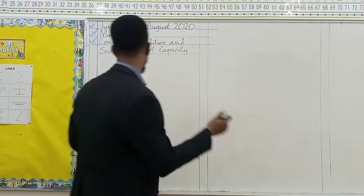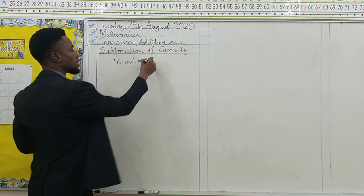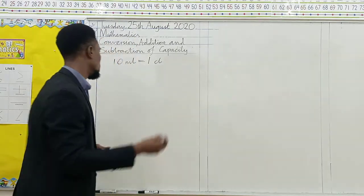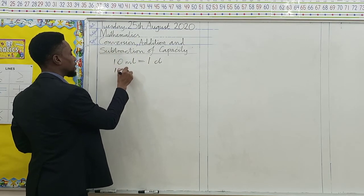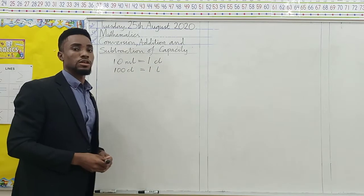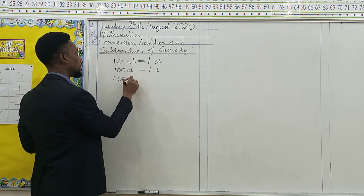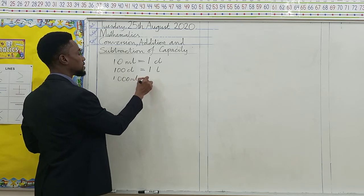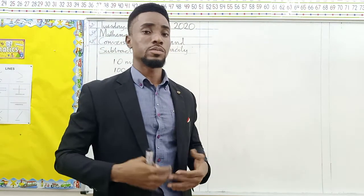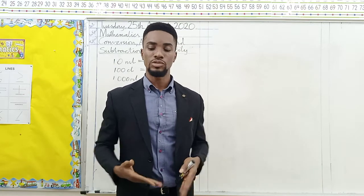Let's start with: 10 milliliters give us 1 centiliter. 100 centiliters gives us 1 liter, while 1,000 milliliters gives us 1 liter. These are the three things we are going to be using in converting from one capacity to the other.